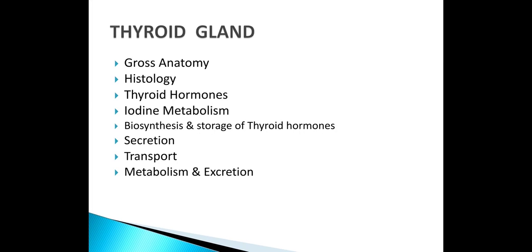Good morning everybody. As you all know, we have an essential organ called a thyroid gland, located in the front of the neck. This gland is called a shield. It has two lobes attached by an isthmus. Among the major glands we have been discussing — first was the anterior pituitary, the posterior pituitary — now we go on to discuss the thyroid gland.